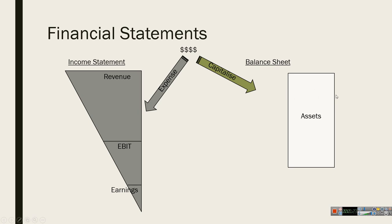On the balance sheet you'll find a machine which you paid for in cash up front. Each year you depreciate one portion of it across the income statement, reflecting its useful life, so that revenues and expenses match each other over the most recent 12 months.